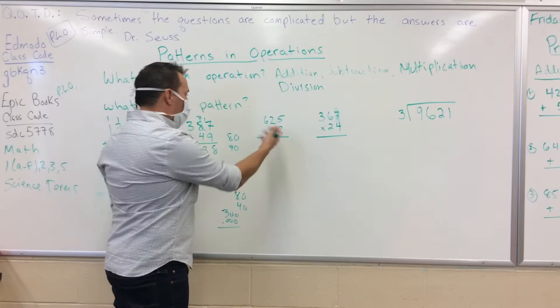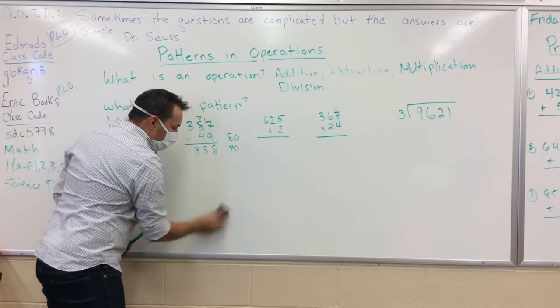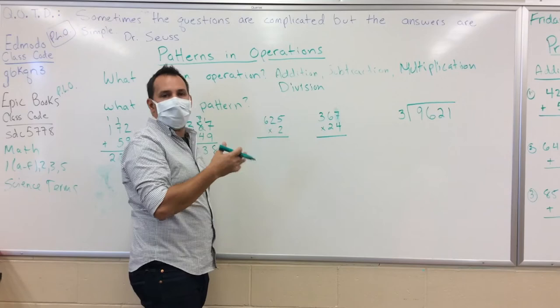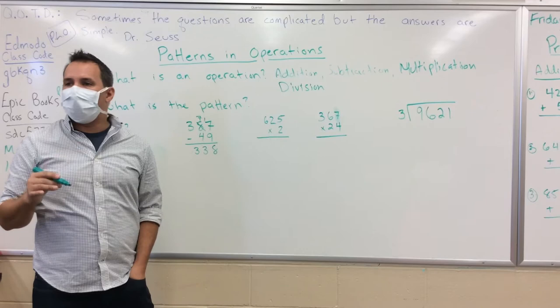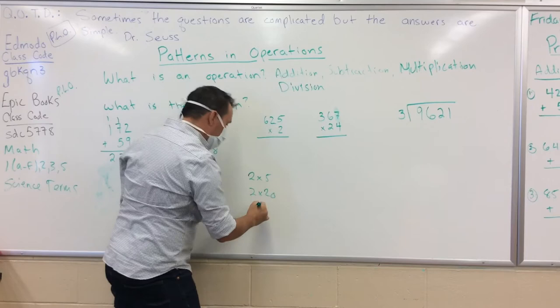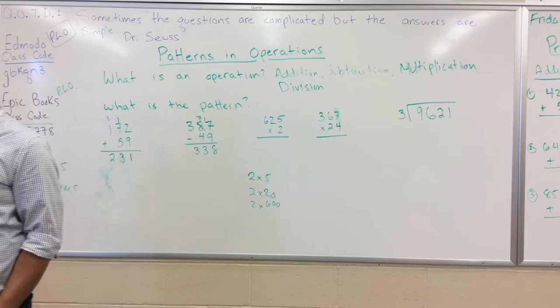When we go into multiplication, the pattern changes and becomes a little more difficult. This is still review from last year, so we should be able to go through it. We've got 2, and we multiply the 2 by each of the columns — 2 multiplied by 5 first, then 2 multiplied by 20, then 2 multiplied by 600. That's the pattern when we're using multiplication.